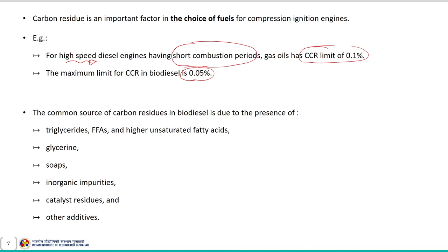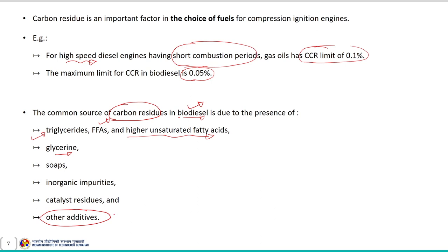Common sources of carbon residues in biodiesel include the presence of triglycerides. If some triglyceride remains in the biodiesel, it causes carbon residue formation during combustion. Free fatty acids and higher unsaturated fatty acids present in biodiesel are major causes of carbon residue formation. Additionally, glycerine, soaps, inorganic impurities, catalytic residues, and other additives from the source material may also contribute to carbon residue formation.